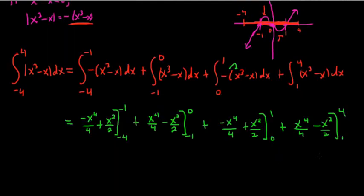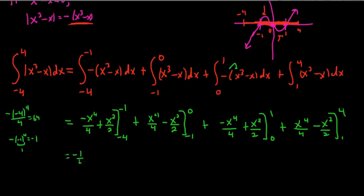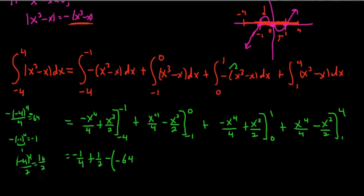Let's figure out some values before plugging in. We'll plug in 4 multiple times: 4⁴ is 256, divided by 4 gives 64. Plugging in negative 1 into x⁴/4 gives 1/4, and into x²/2 gives 1/2. So the first bracketed piece evaluates as: negative 1/4 plus 1/2, minus (negative 64 plus 8), noting that negative 4 squared over 2 is 16/2 = 8, so that lower bound gives negative 64 plus 8.